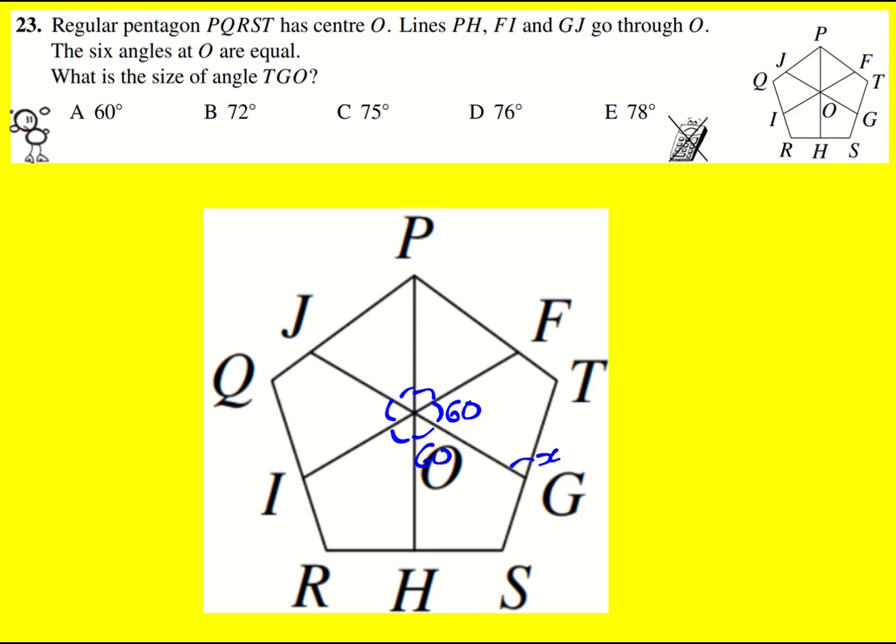And also, because it's a regular pentagon, the angles add up to 540. Number of sides minus two is three times 180 is 540. That's how you find the interior angle sum of any polygon. Divide that by five, which is 108.